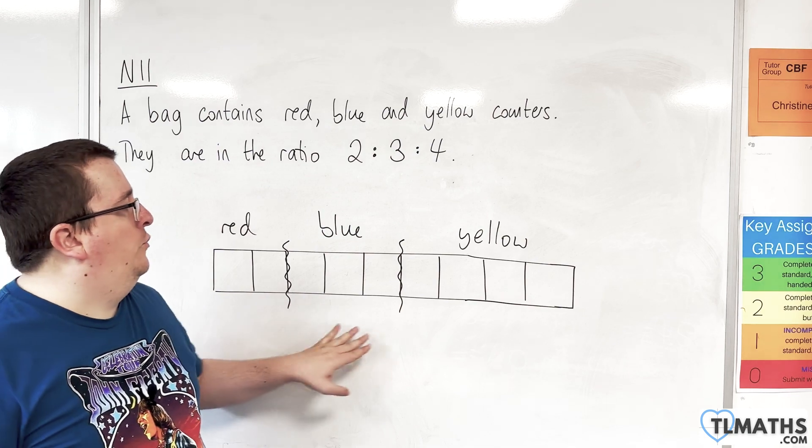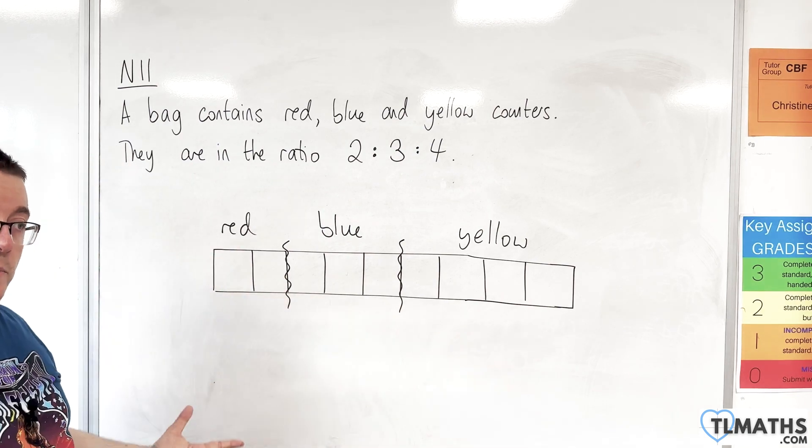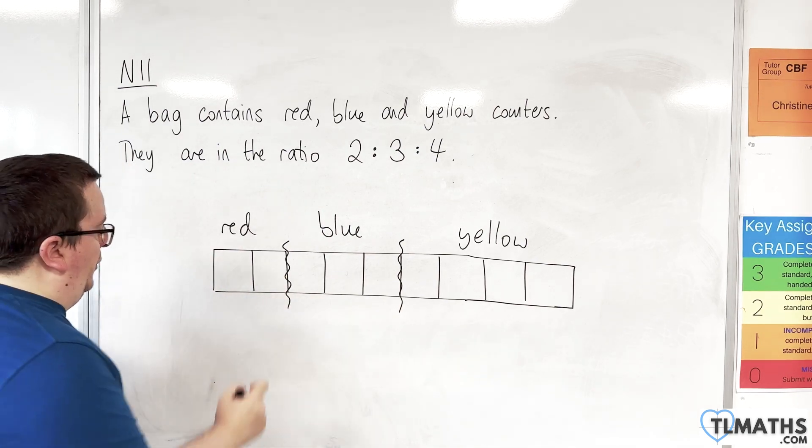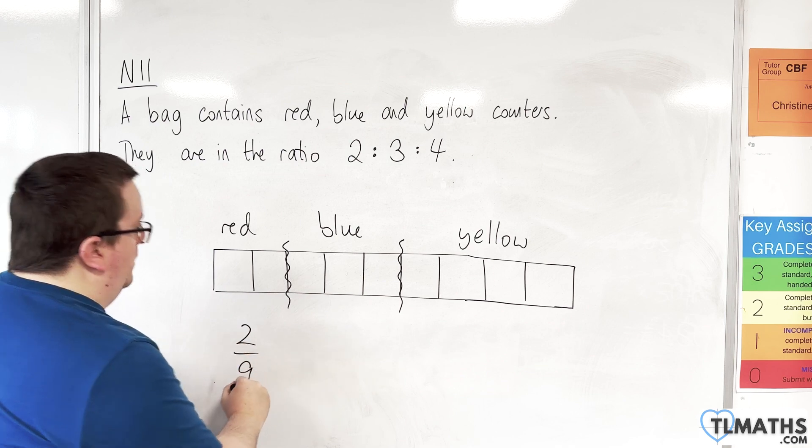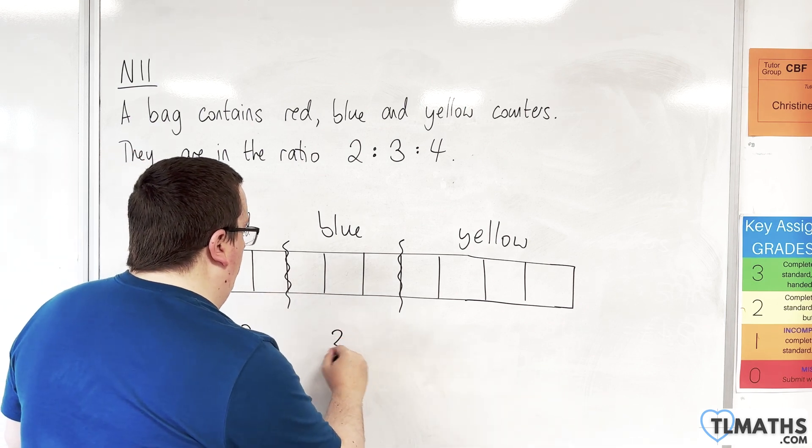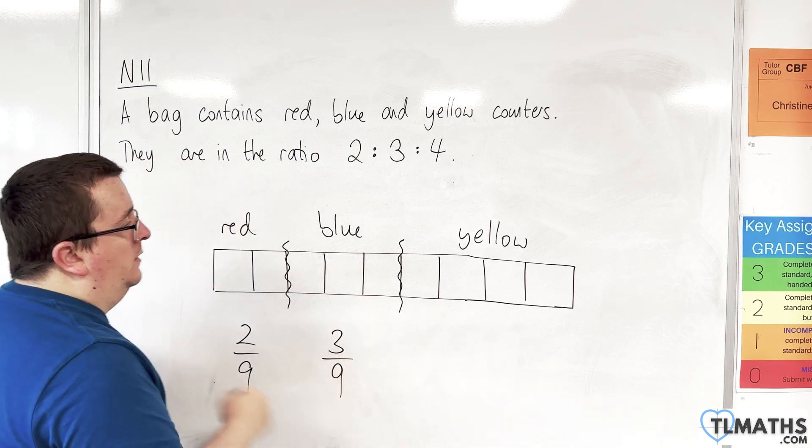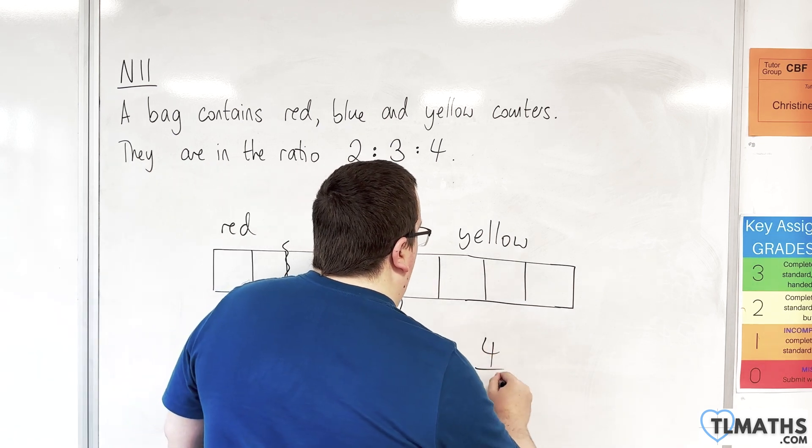You add up the 2, the 3, the 4 - that gets you your denominator, which is 9. So 2/9 are red, 3/9 are blue (or 1/3), and 4/9 are yellow.